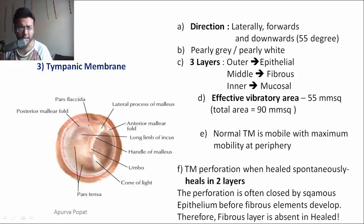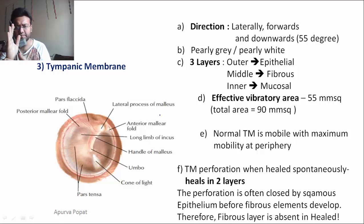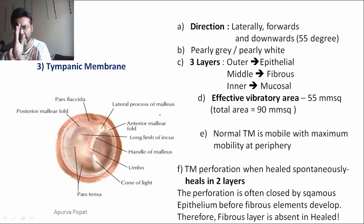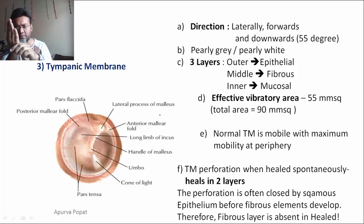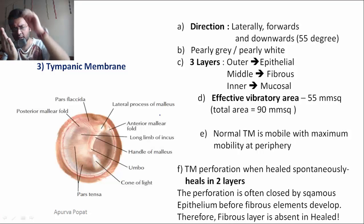The orientation of the tympanic membrane is such that — taking the right tympanic membrane as an example — it faces laterally, a little bit forwards, and 55 degrees downwards. So to summarize: the tympanic membrane faces laterally, slightly forwards, and 55 degrees downwards.